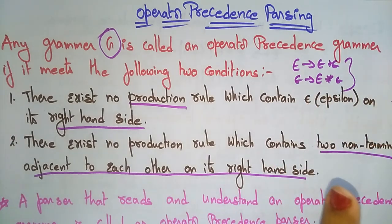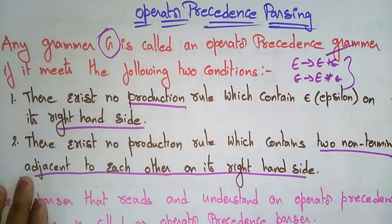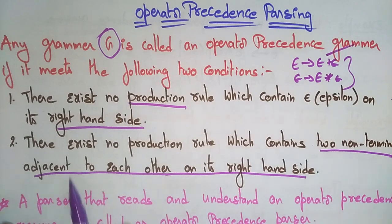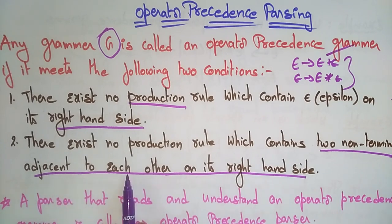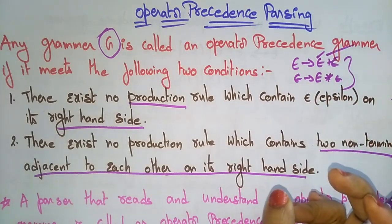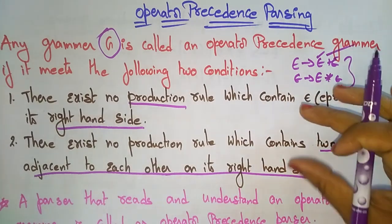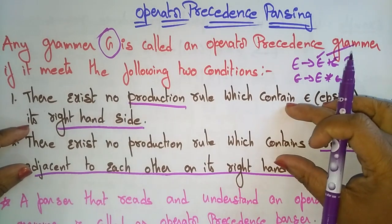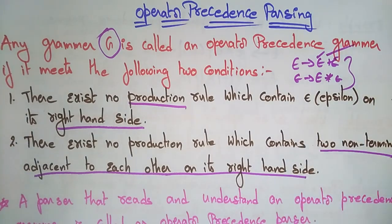In this example, there exists no production rule which contains epsilon on the right hand side, and there exists no production rule which contains two non-terminals adjacent to each other. Whenever the grammar follows these two conditions, we can say that grammar is an operator precedence grammar.